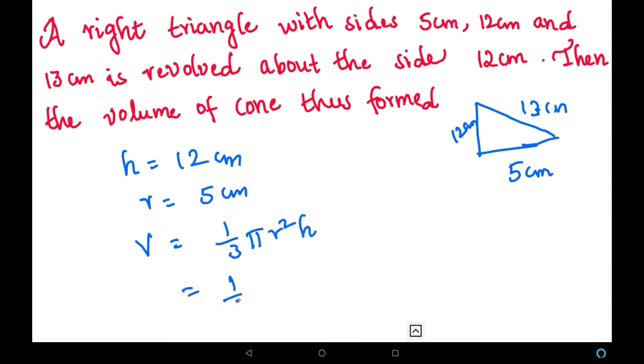Now let us substitute the values, that is 1/3 × 22/7. We know the r value, that is 5, and height value, that is 12. Let us simplify this. This 3 and 12 gets cancelled.